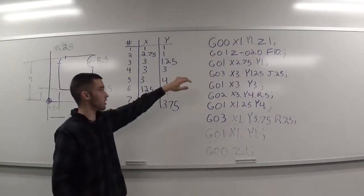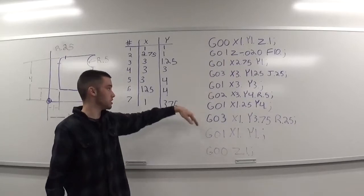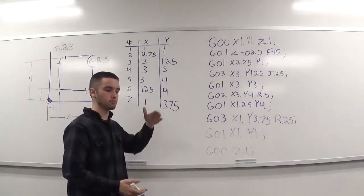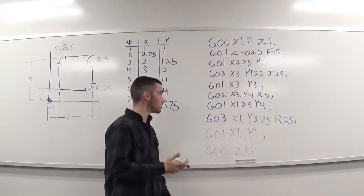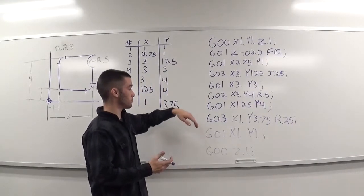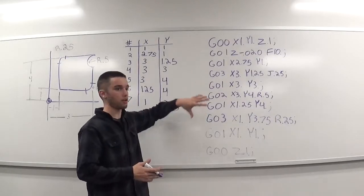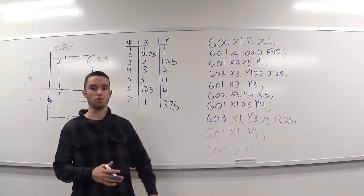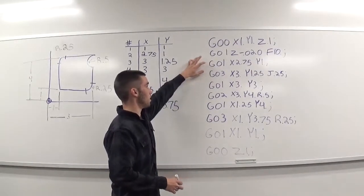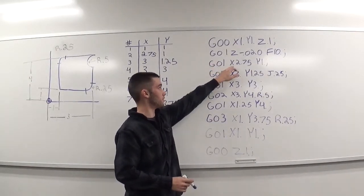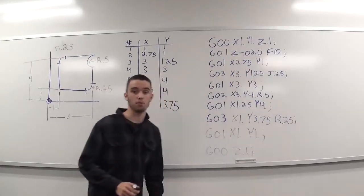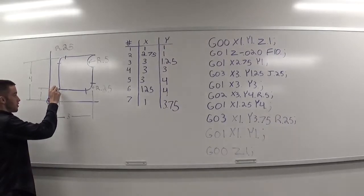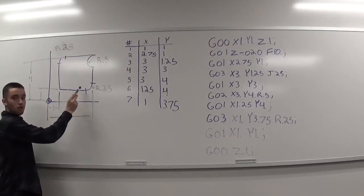Going to G01 again. Now, remember these G codes right here, they're all modal, meaning you have to call a different G code to get out of the G code you're currently in. But, for this scenario, I'm calling up every G code, whether I'm using the same G code twice in a row, just to make it easier for you to follow along with what I'm doing. So, we're at G01. We need to move over to an x of 2.75 and a y of 1. We're already at a y of 1, so we don't have to move in the y direction at all. And we're going to an x of 2.75, which is our first start point.